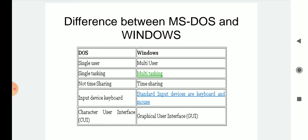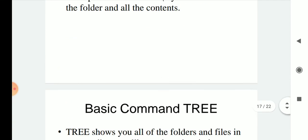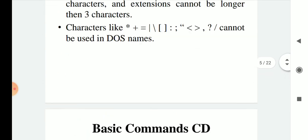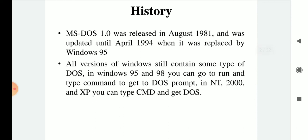Now we are covering the history of MS-DOS. The first version, MS-DOS 1.0, was released in August 1981. If you are asked when the first version of MS-DOS was released, you can say August 1981. As time proceeded, a few editions were released, and in 1994 MS-DOS was replaced by Windows 95.